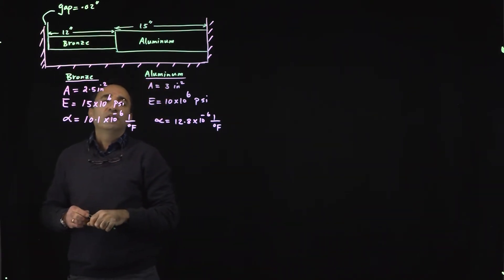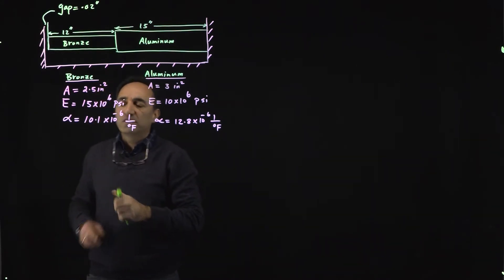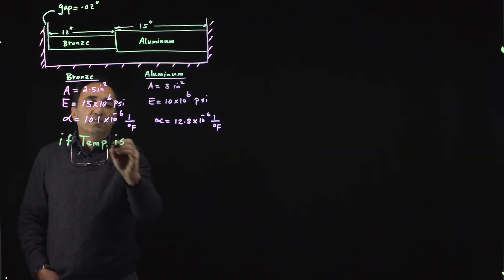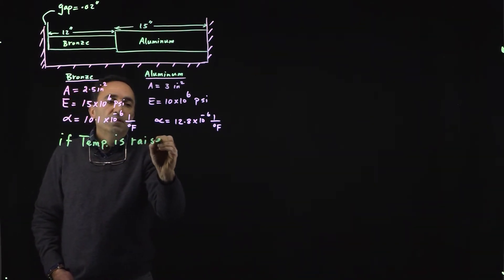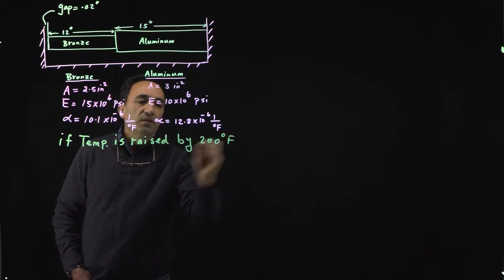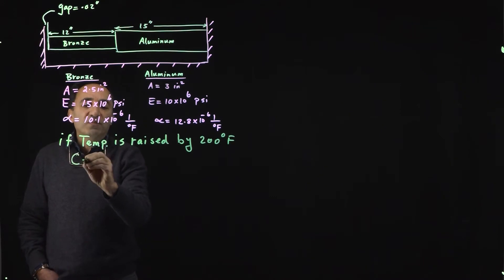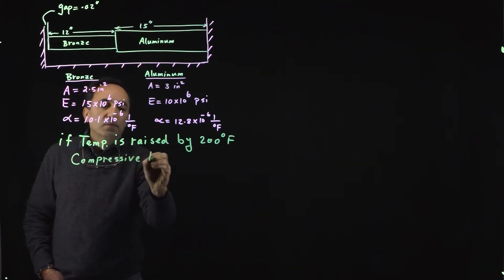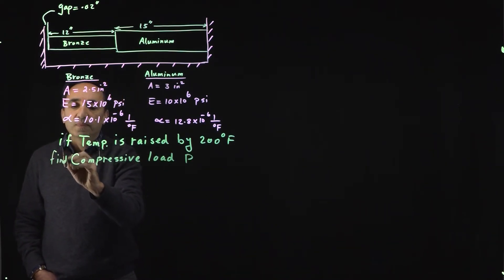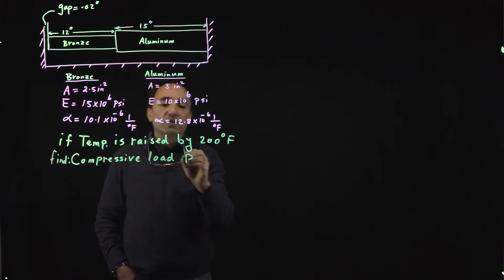The question here is if we raise the temperature by 200 degrees Fahrenheit. If temperature is raised by 200 degrees Fahrenheit, we want to determine the compressive load P developed in the bar. Find what is the compressive load P developed.